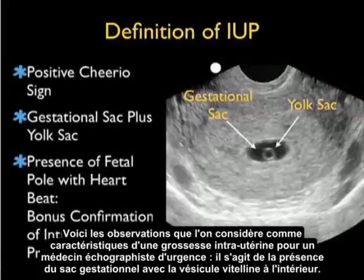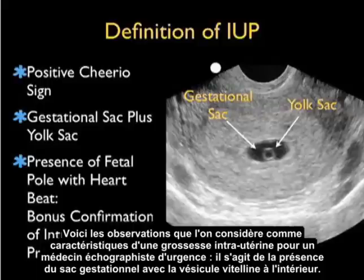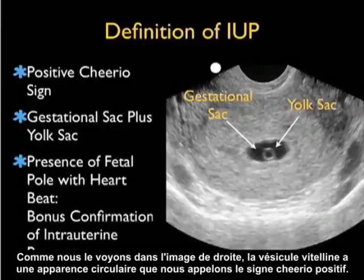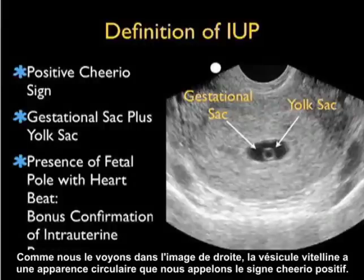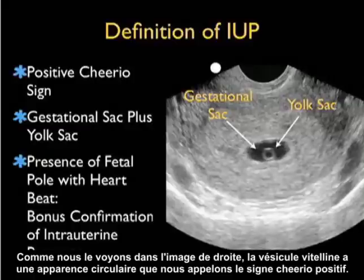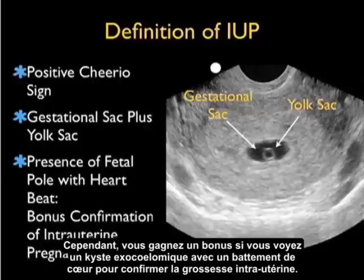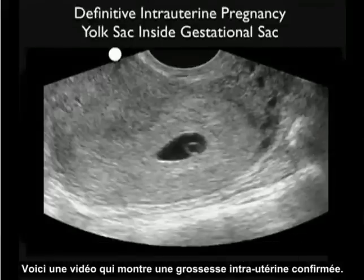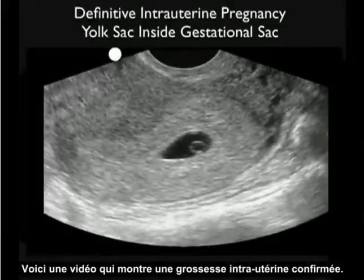The findings that define an intrauterine pregnancy for an emergency physician sonographer are the presence of a gestational sac with a yolk sac inside. As seen in the picture, the yolk sac has a circular appearance that we call the positive cheerio sign. Remember: gestational sac plus yolk sac is indicative of intrauterine pregnancy. Bonus points are given if you also see a fetal pole with a heartbeat for confirmation. Here's a video clip showing a definitive intrauterine pregnancy.